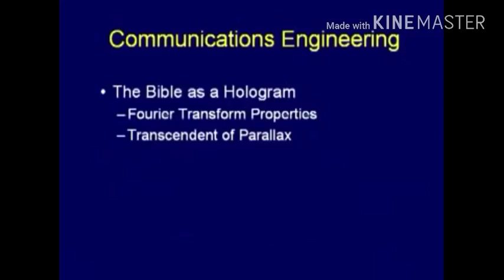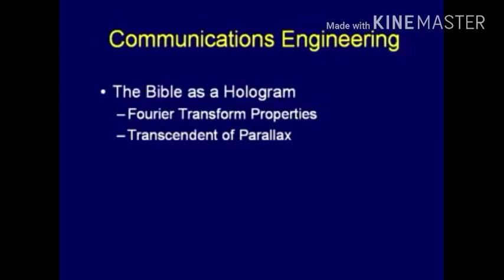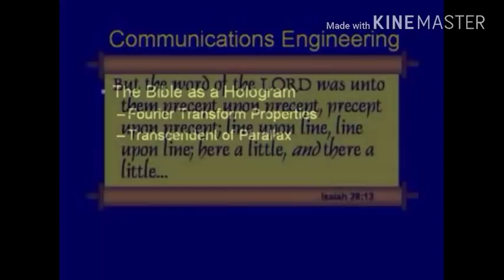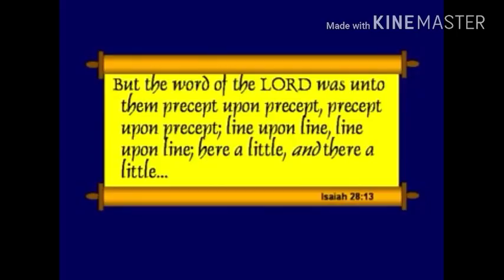The Bible is a hologram. It has Fourier transform properties. It's transcendent in any parallax. And that's exactly what Isaiah says. Isaiah 28 says, 'The word of the Lord was unto them precept upon precept, precept upon precept, line upon line, line upon line, here a little, there a little.' The message of God in the Bible is spread throughout the entire Bible.